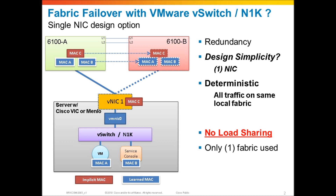But on the downside, you have no load sharing here. All of the traffic from this server is using 6100A and not at all using 6100B. Even though we might have two 10-gig paths available out of this physical adapter, we're really only using one of them, and only one fabric is used. So it may not be the best option to use fabric failover with VMware when you're running the vSwitch or 1000V. You're probably better off just allowing the virtual switch environment with multiple adapters to manage the high availability and load sharing — unless a single vNIC design with high availability is appealing to you.